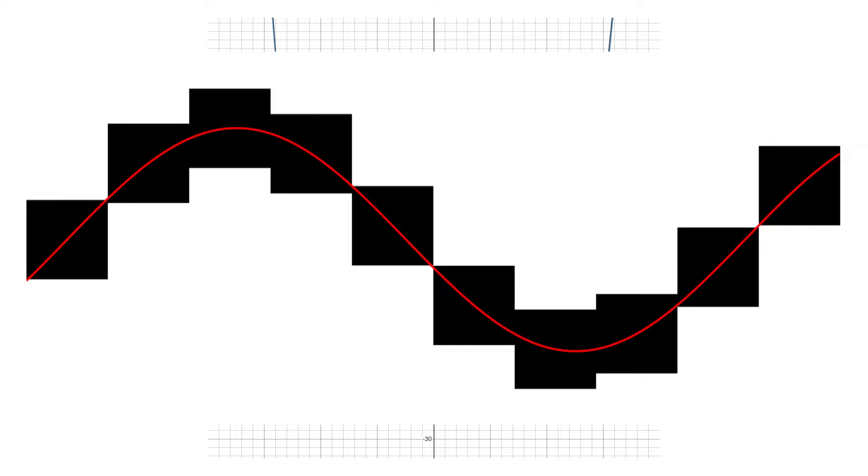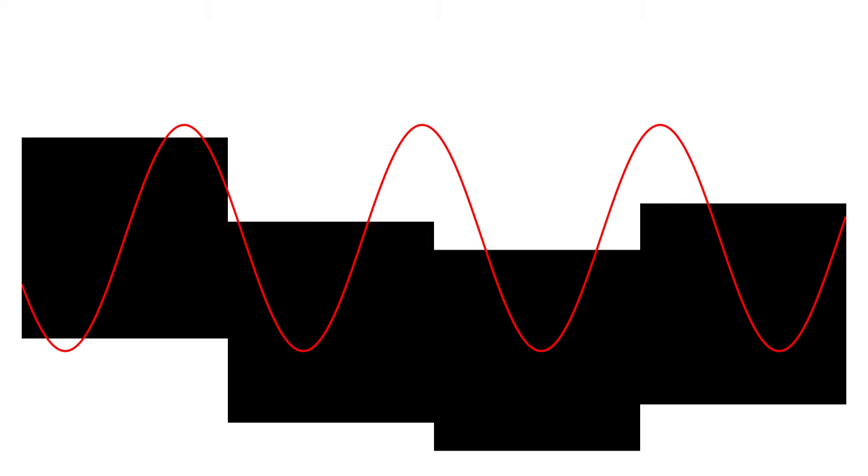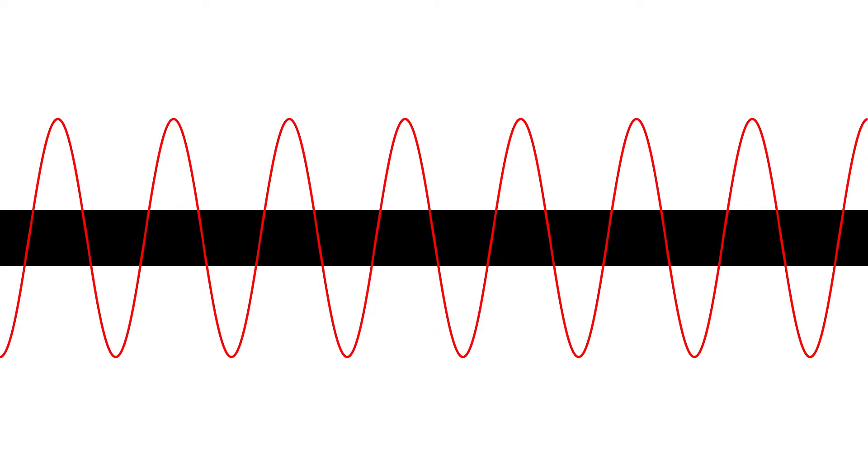Remember that our calculator only takes a measurement every pixel. This means that it doesn't care what we do in between each measurement. For example, if we were to have a sine wave that repeats exactly every pixel, it would just be graphed as a straight line.